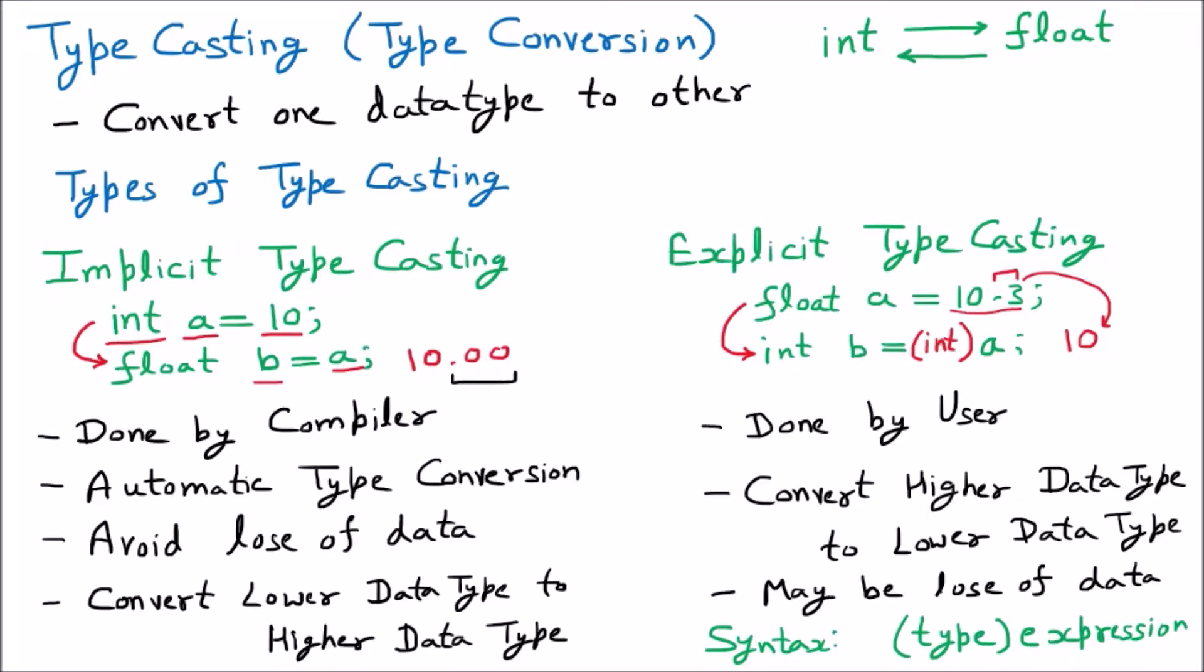Okay everyone, so now we are discussing the difference between implicit type conversion and explicit type conversion. We have learned that implicit type conversion is done by the compiler, meaning we don't have to write anything - the compiler will automatically do this. If I talk about explicit, it is done by the user, meaning we have to write the code for that.